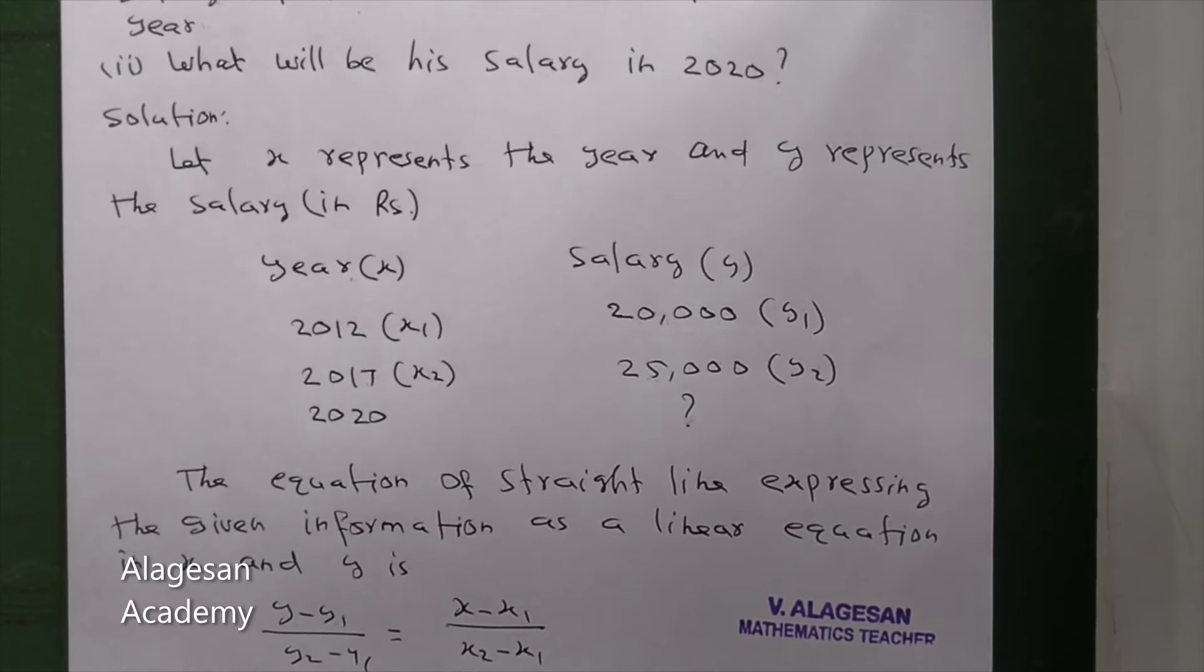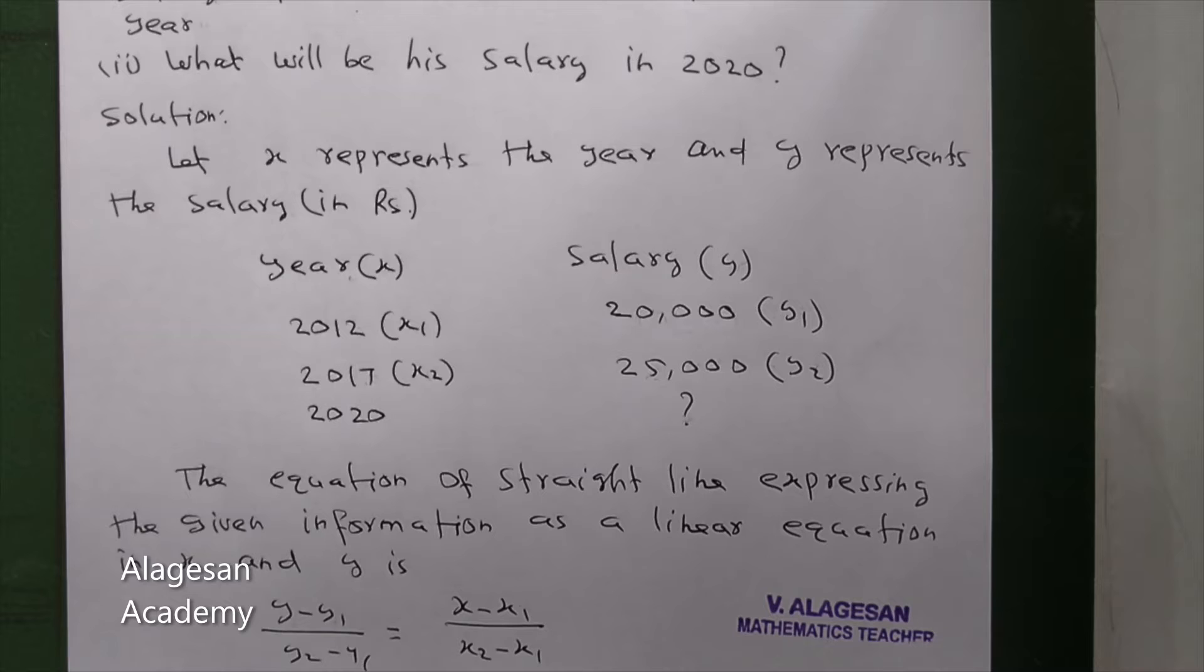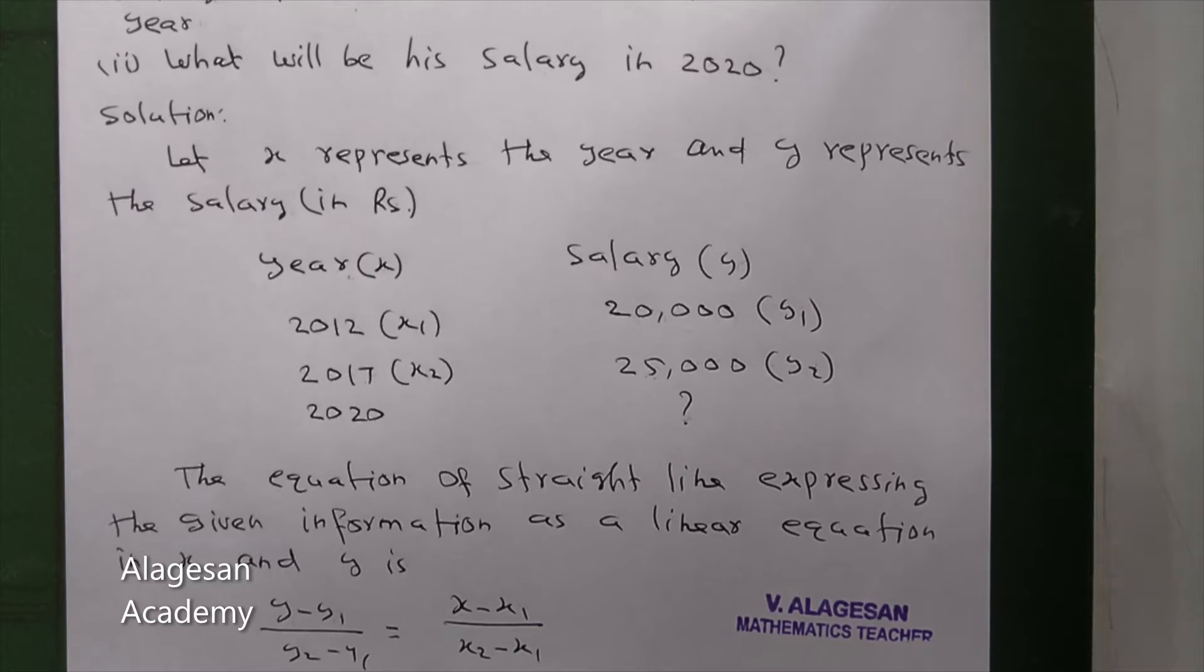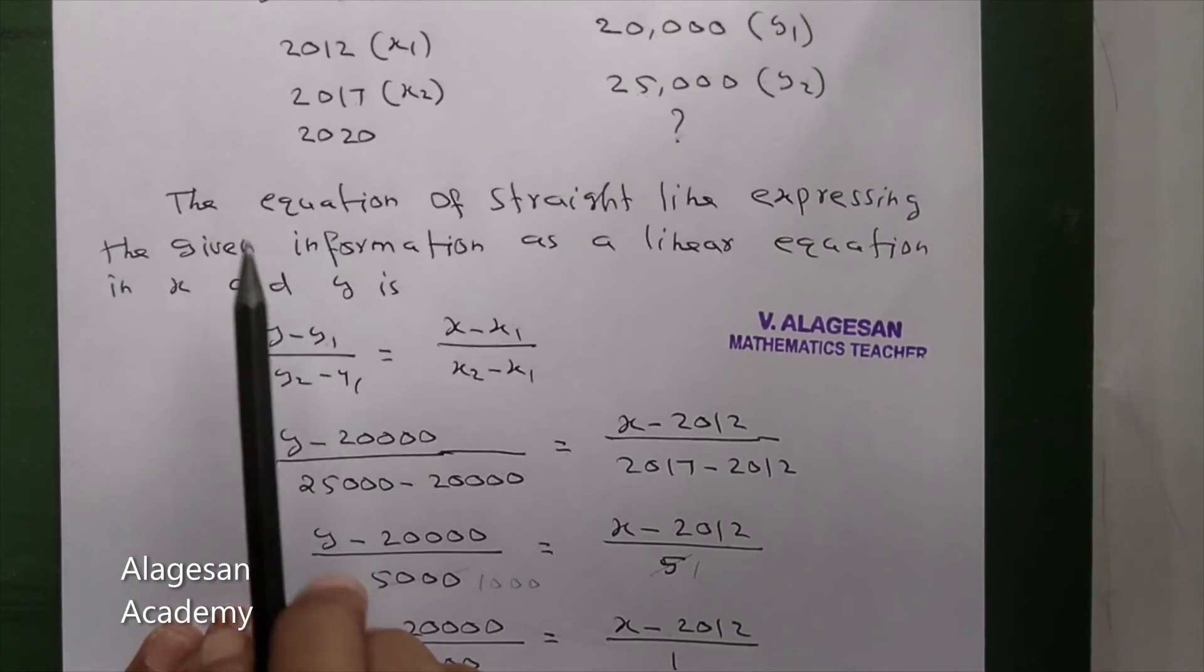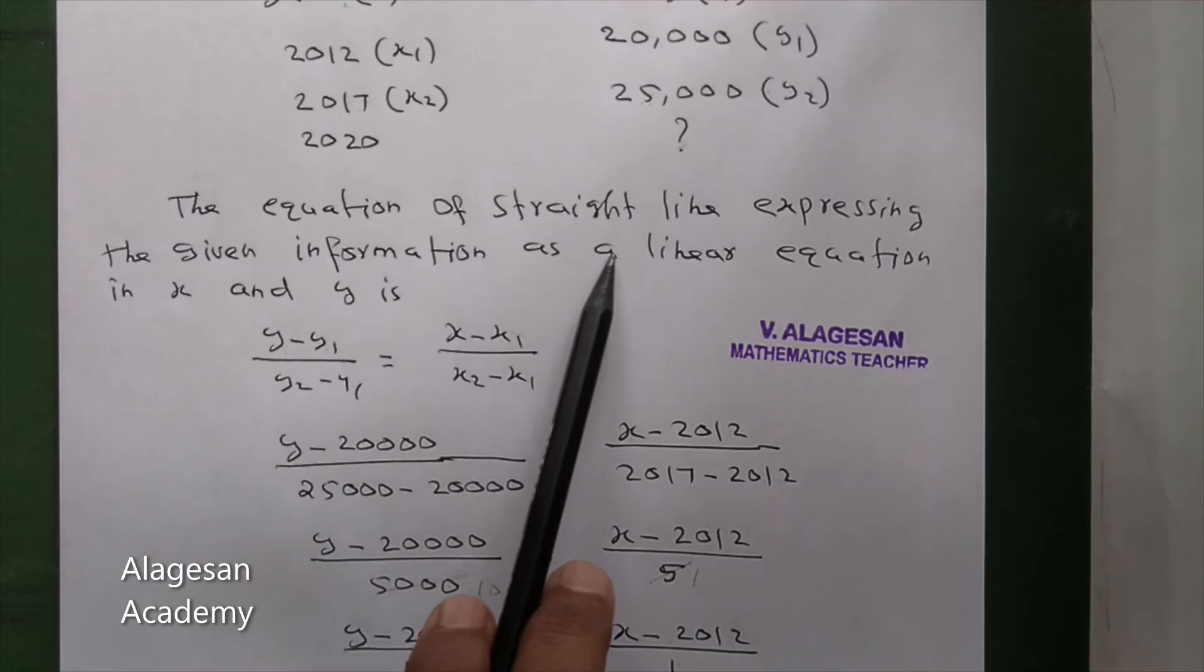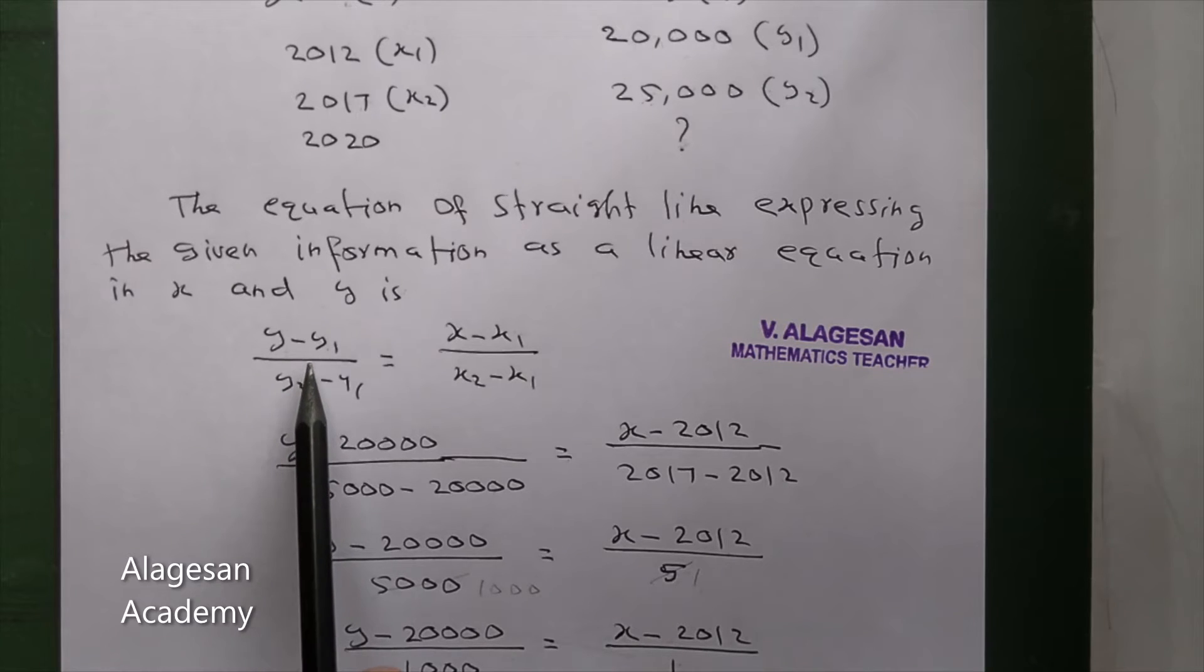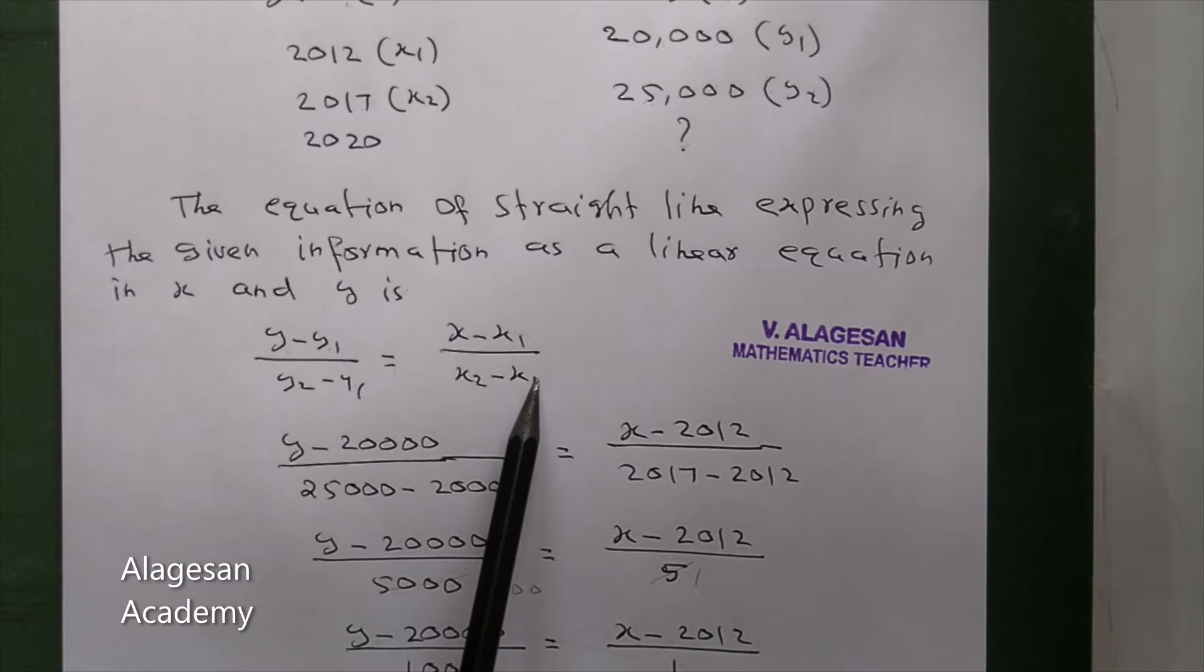First we have to find the equation of the straight line joining the points x1, y1 and x2, y2. The equation of the straight line passing through two points gives us the linear equation in x and y for the given information. What is the equation? y minus y1 by y2 minus y1 equal to x minus x1 by x2 minus x1.